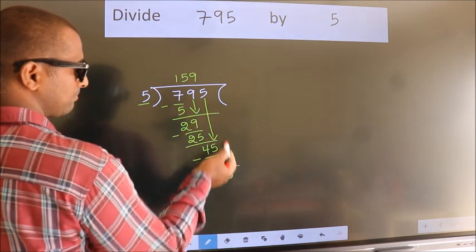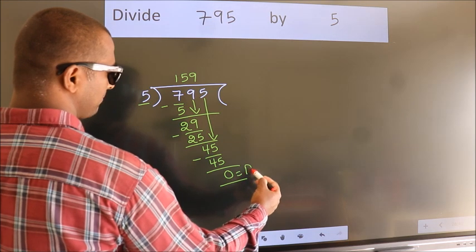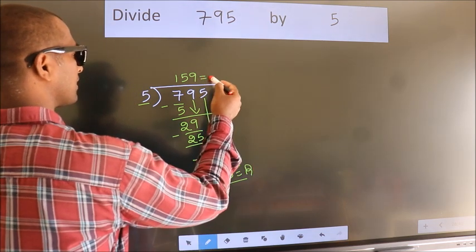No more numbers to bring down. So we stop here. This is our remainder. This is our quotient.